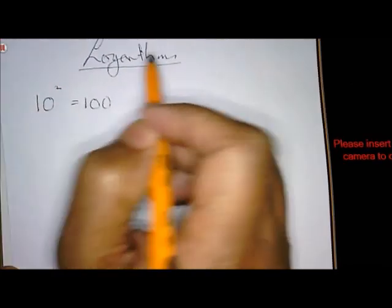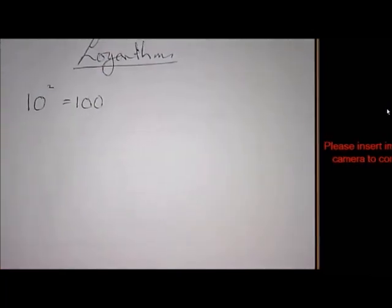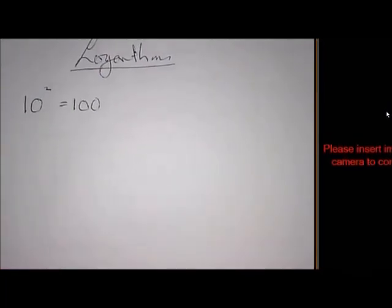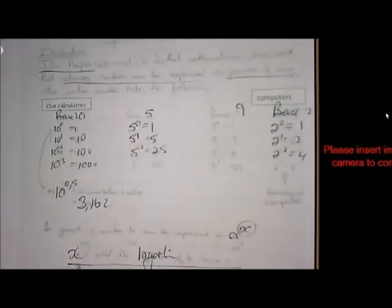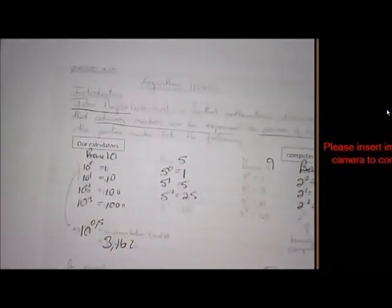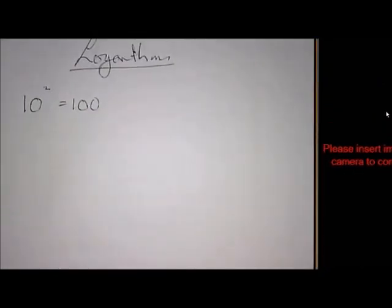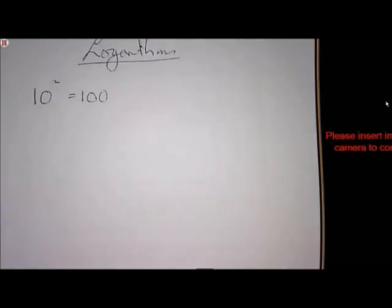Logarithms. Now, remember those first two pages I sent you? You can just read through it on your own, but I'm going to sum it up for you. John Napier was a Scottish mathematician, and he is the one who discovered that numbers can be expressed as powers.